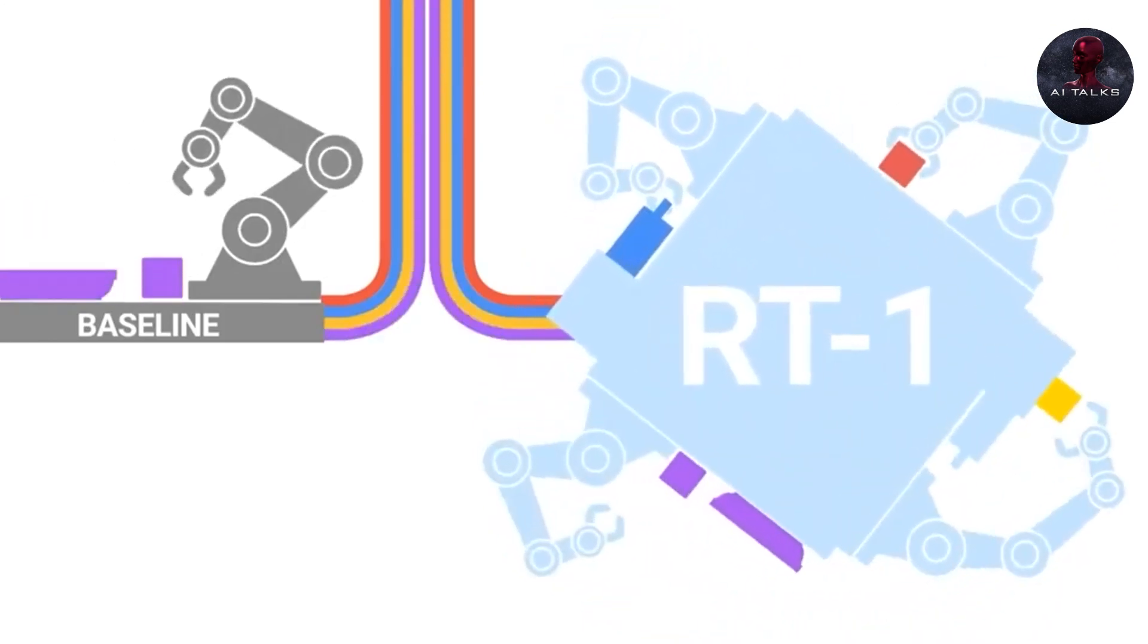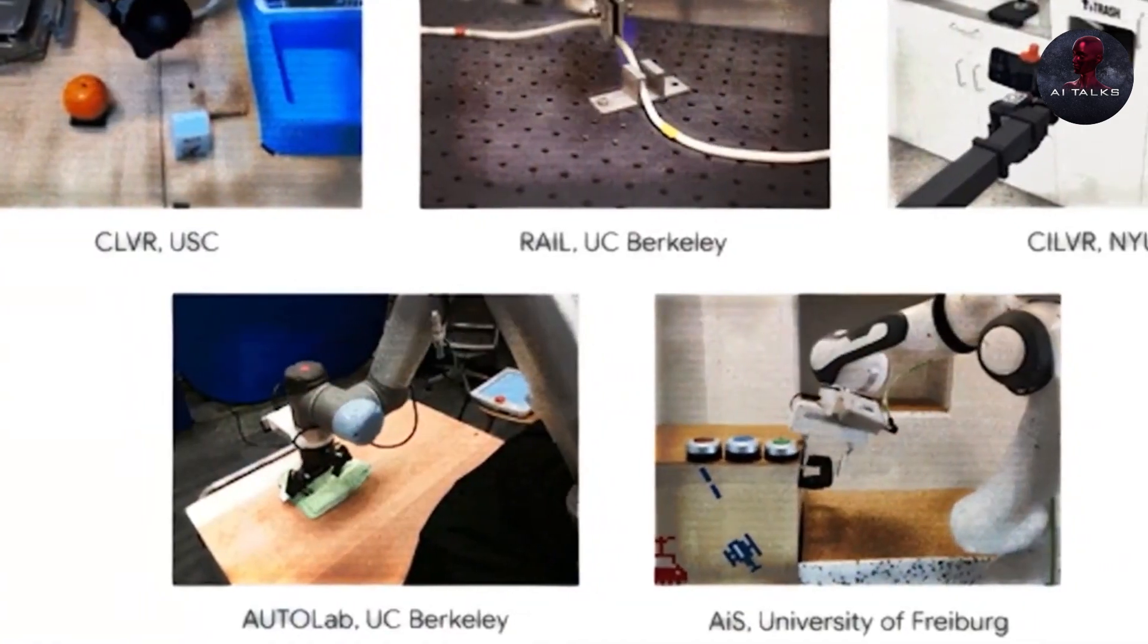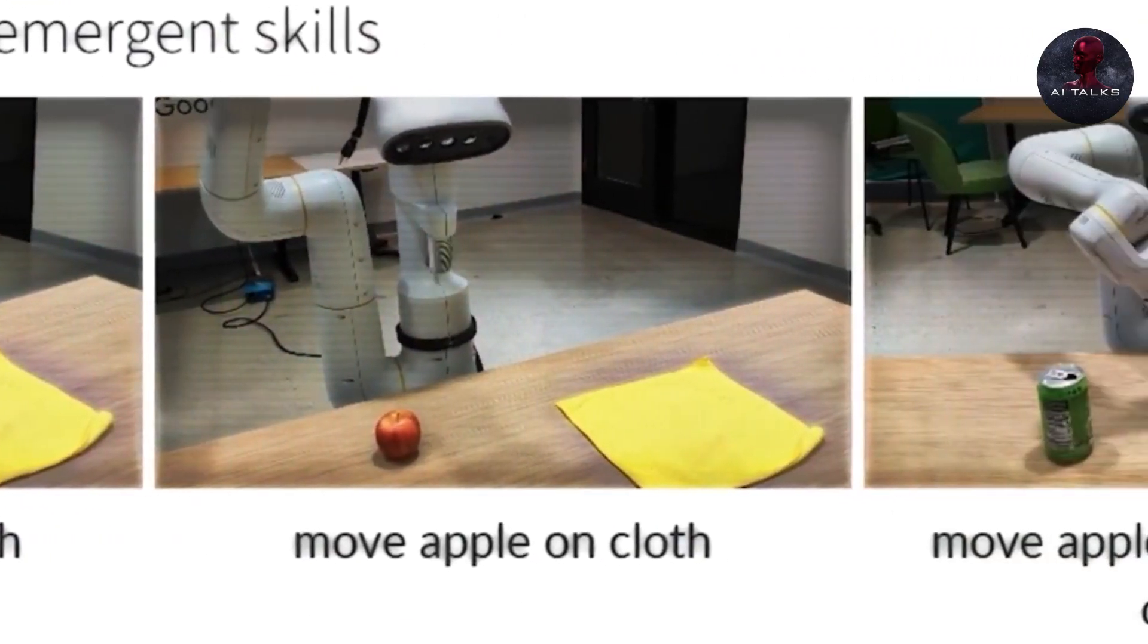This enables models to focus on the most relevant information and relationships to excel at tasks. RTX models harness the capabilities of transformers, allowing them to selectively prioritize key elements of visual,